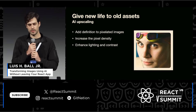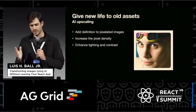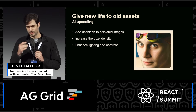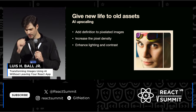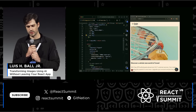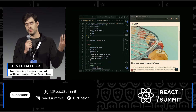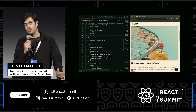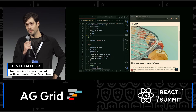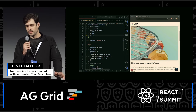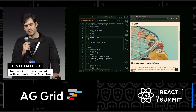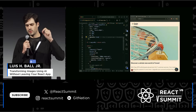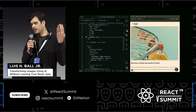Last thing we want to do is upscaling — this is my personal favorite, it's like a magic trick. You're going to add some definition to pixelated images, increase the pixel density, and do things like enhanced lighting and contrast. In our Contentful Next.js application, we have an image component that all our images use. But maybe we have a lot of user-generated content — not everybody has the latest and greatest stuff. What we have to do is add the upscale parameter, and now with upscale equals true in our image URL, our image gets automatically upscaled, and that carousel looks great.